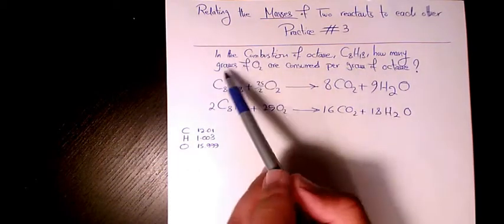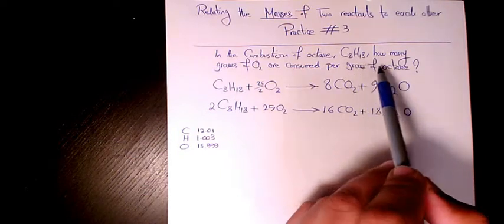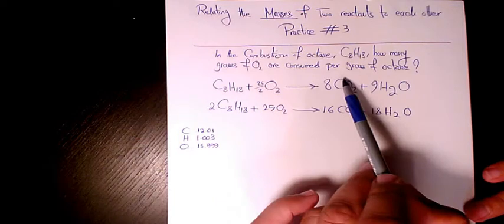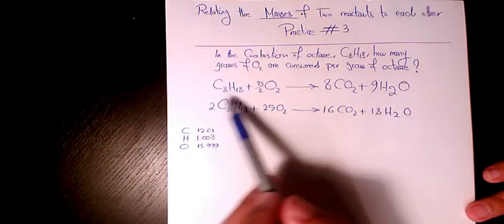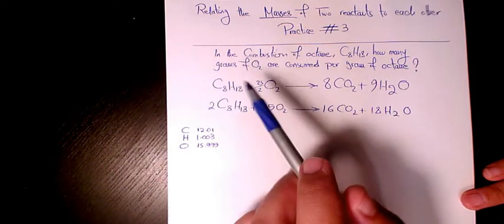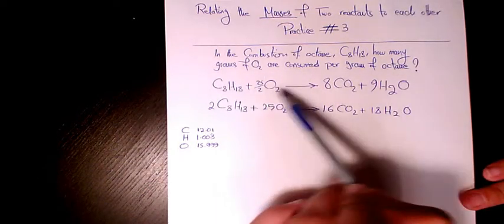C8H18. How many grams of O2 are consumed per gram of octane? So we have octane plus O2 gives us CO2 and H2O. The first step is to balance this chemical equation.